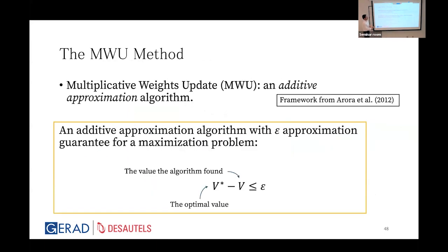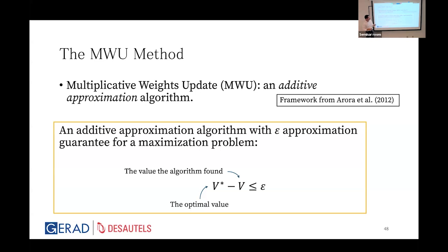The multiplicative weight update algorithm has roots in adversarial online learning. An additive approximation algorithm differs from a multiplicative one: instead of V* ≤ (1−ε)·V, the gap V* minus V is at most ε. This is the approximation guarantee we are working with here.